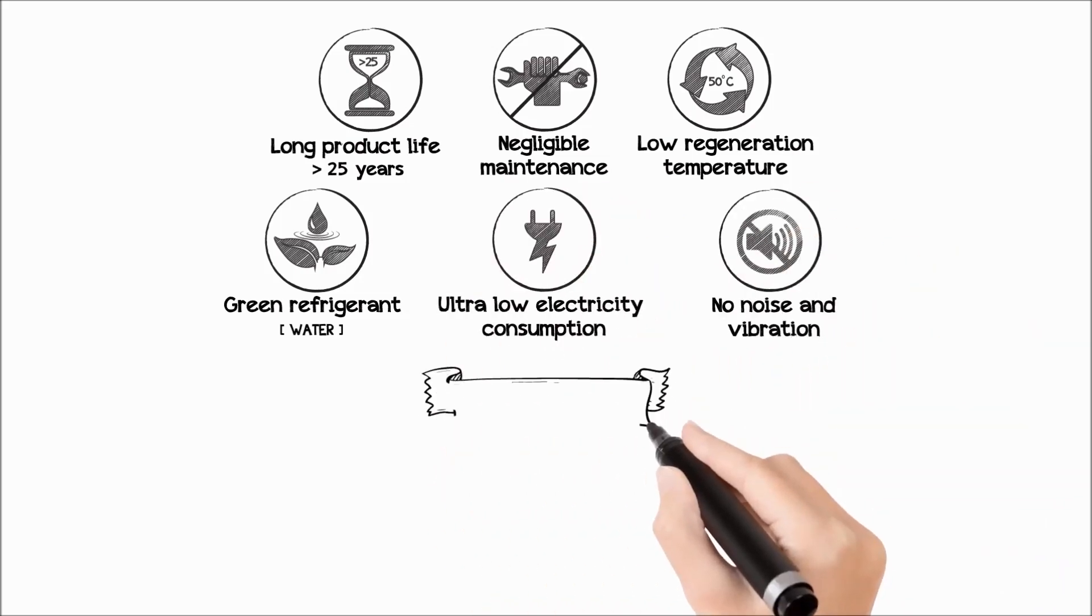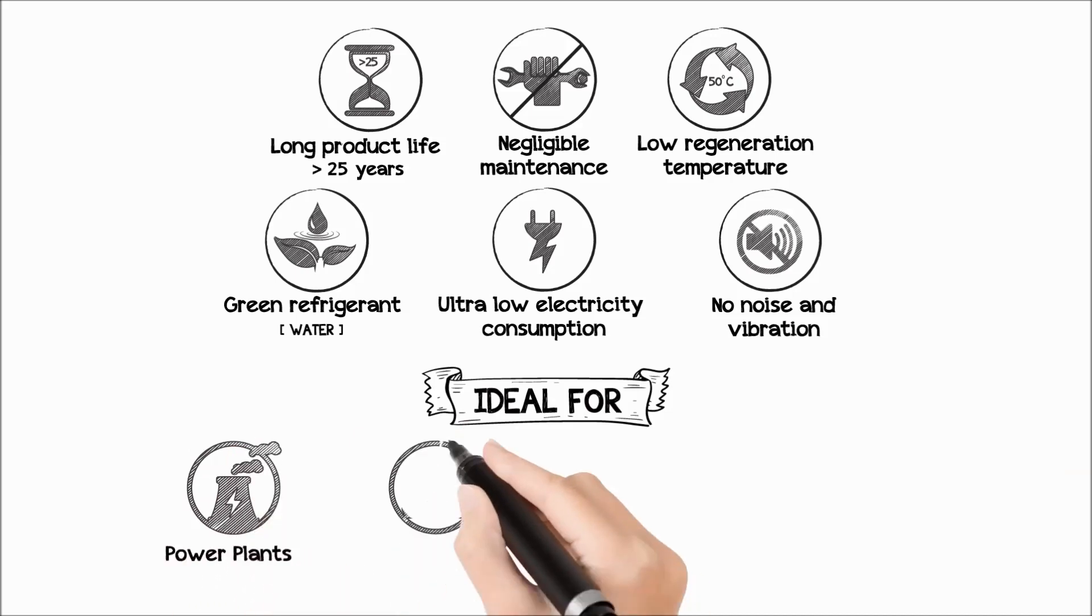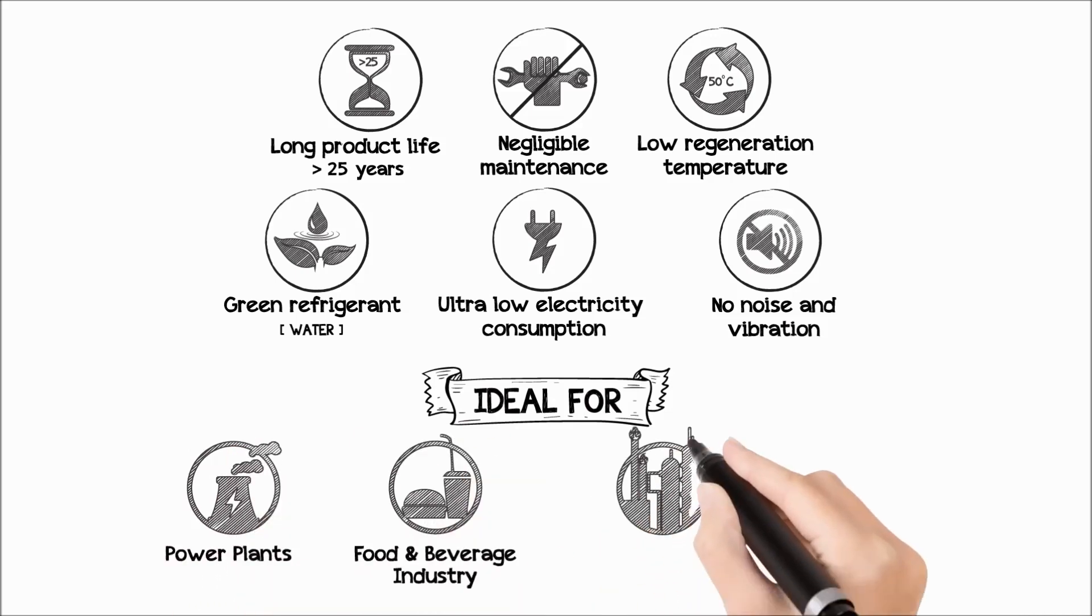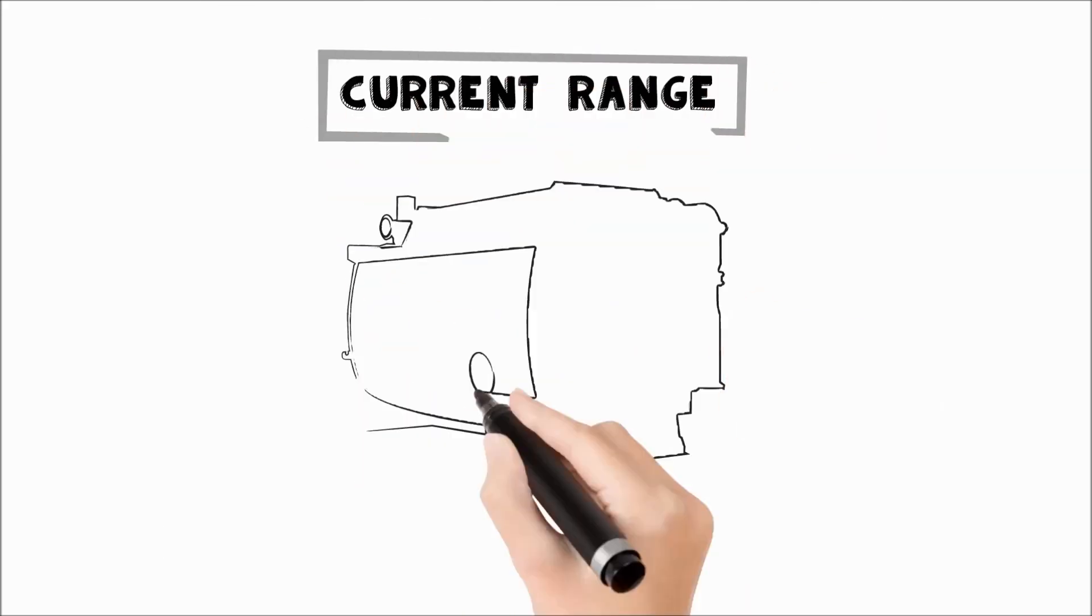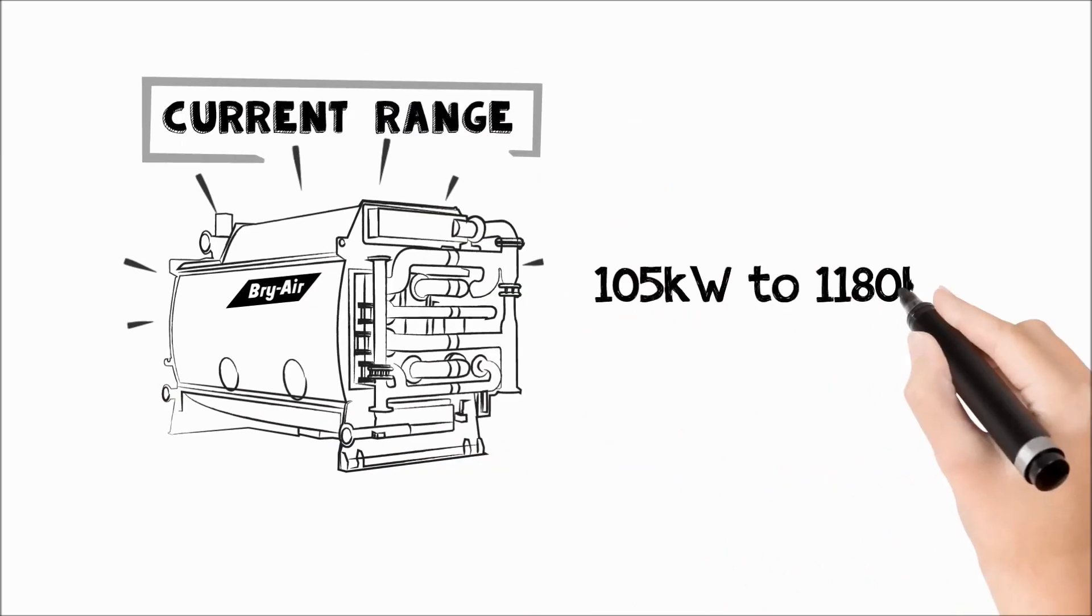Briair absorption chillers are ideal for power plants, food and beverage industry, petrochemical and refinery, chemical industry, etc. The current range is 105 kilowatts to 1,180 kilowatts.